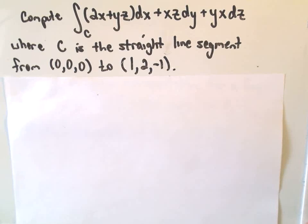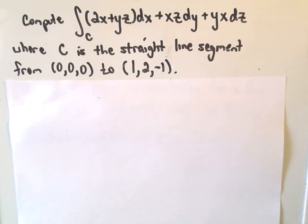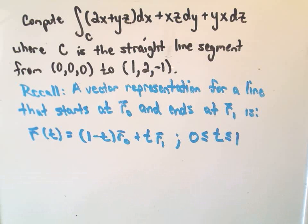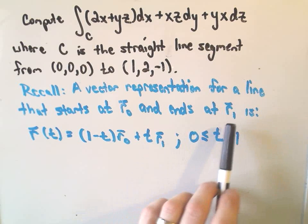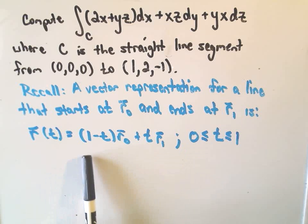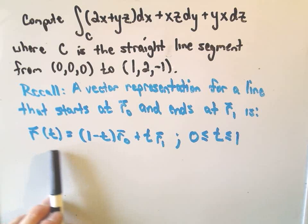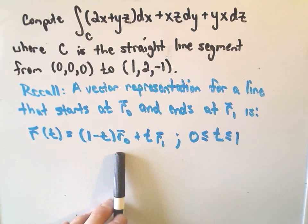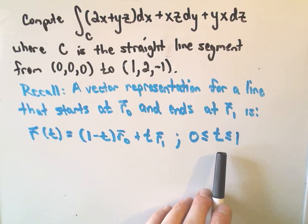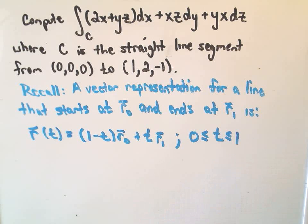One little thing you want to remember again with vectors is a simple way to find a vector representation for a line that starts at one point r0 and ends at some point r1 is we can use this little formula here at the bottom. It says the parametric representation of the line r of t is going to be 1 minus t r0 plus t r1. And this is going to be where t ranges from 0 to 1.